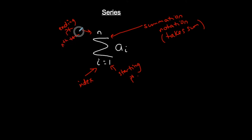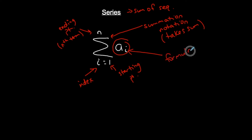A series is basically a sum of a sequence. The sequence can be finite or infinite — you can take the sum of infinite sequences and you can take the sum of finite sequences. Once we take the sum of a sequence, we call it a series. Whatever comes after the summation notation is your formula — it tells you how to find each term. This says take the sum of this formula, starting at this point, increasing by one until you get to the end.